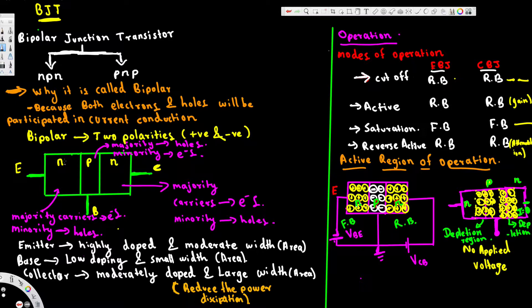For the N parts, the majority carriers are electrons. Both sides have majority carriers as electrons. For the P part, the majority carriers are holes and the minority carriers are electrons.